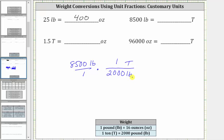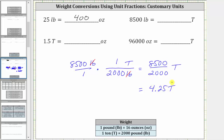Because we have pounds divided by pounds, the units of pounds simplify out, leaving us with tons. Now we multiply. Notice how we have 8,500 divided by 2,000, and the units are now tons. 8,500 divided by 2,000 is 4.25, giving us 4.25 tons. So 8,500 pounds equals 4.25 tons.